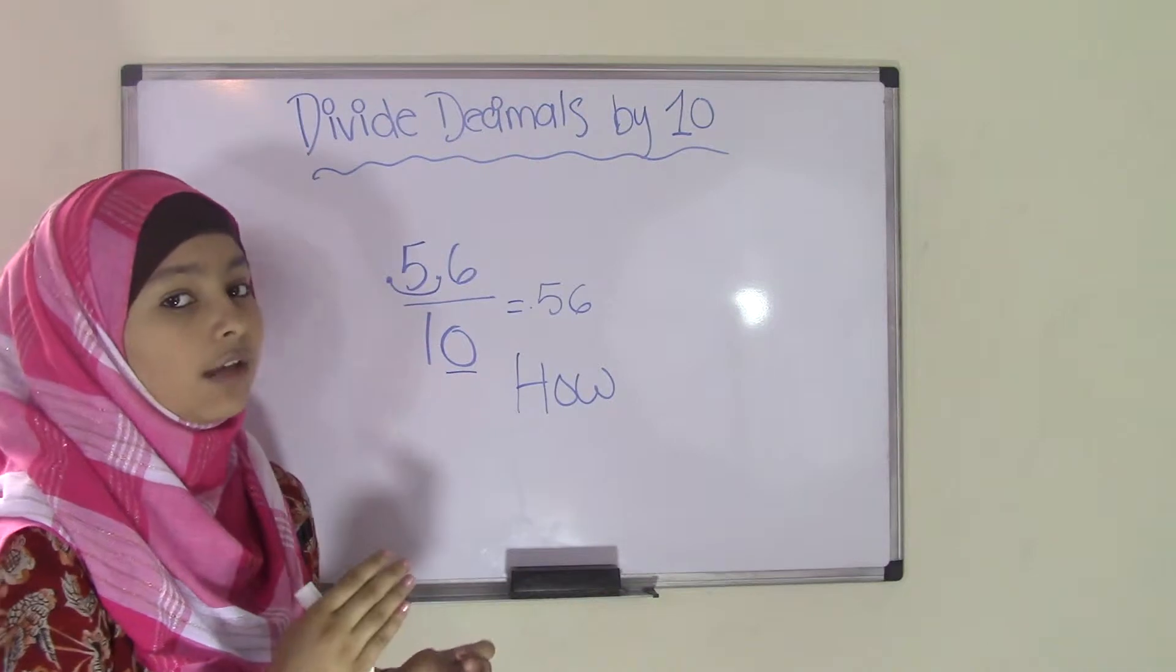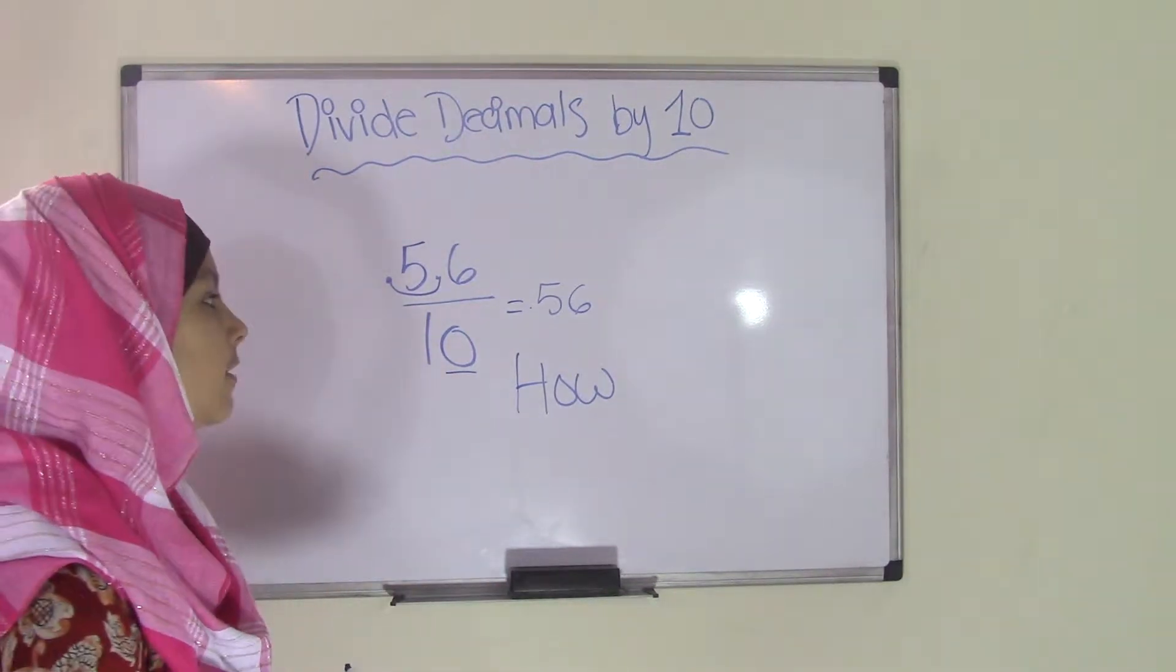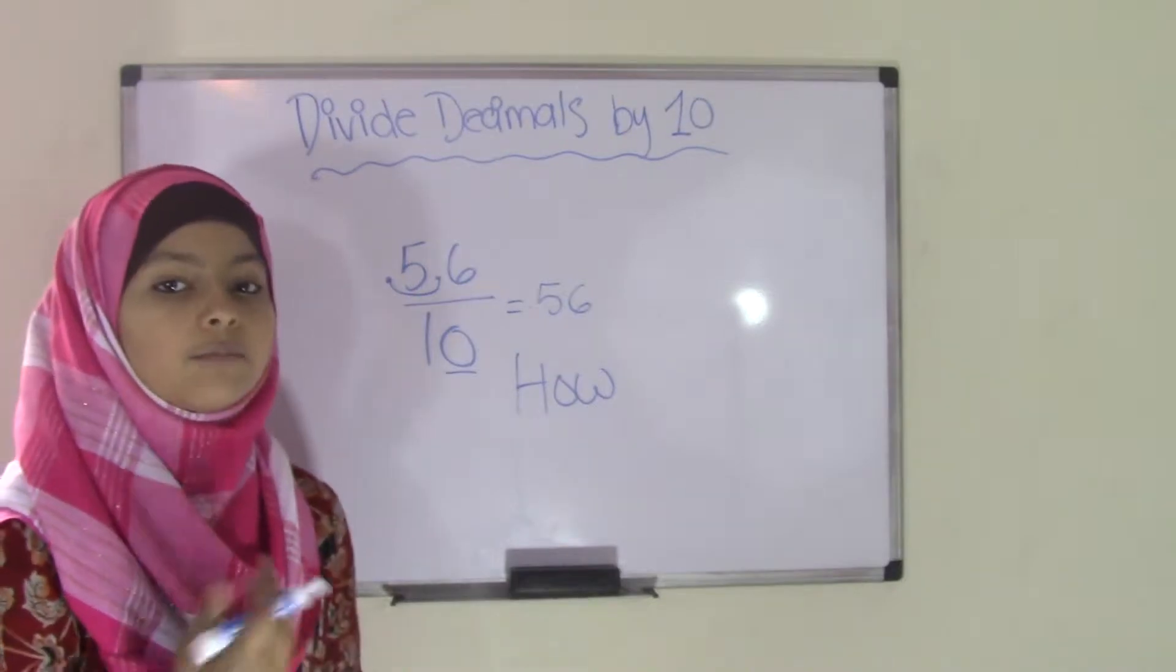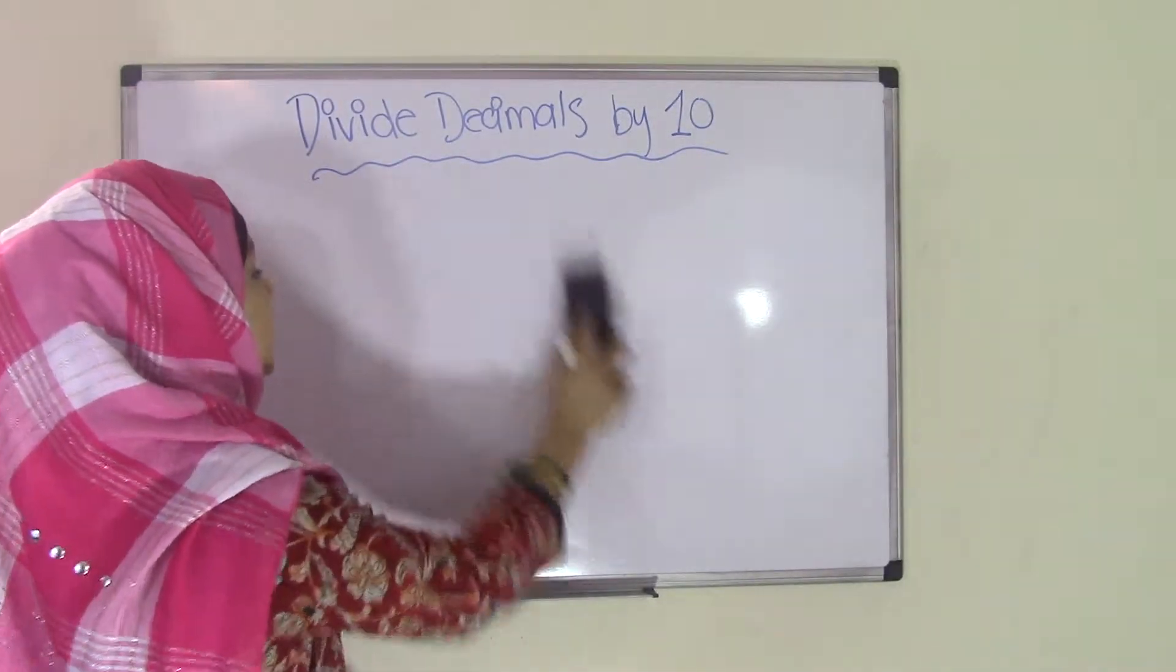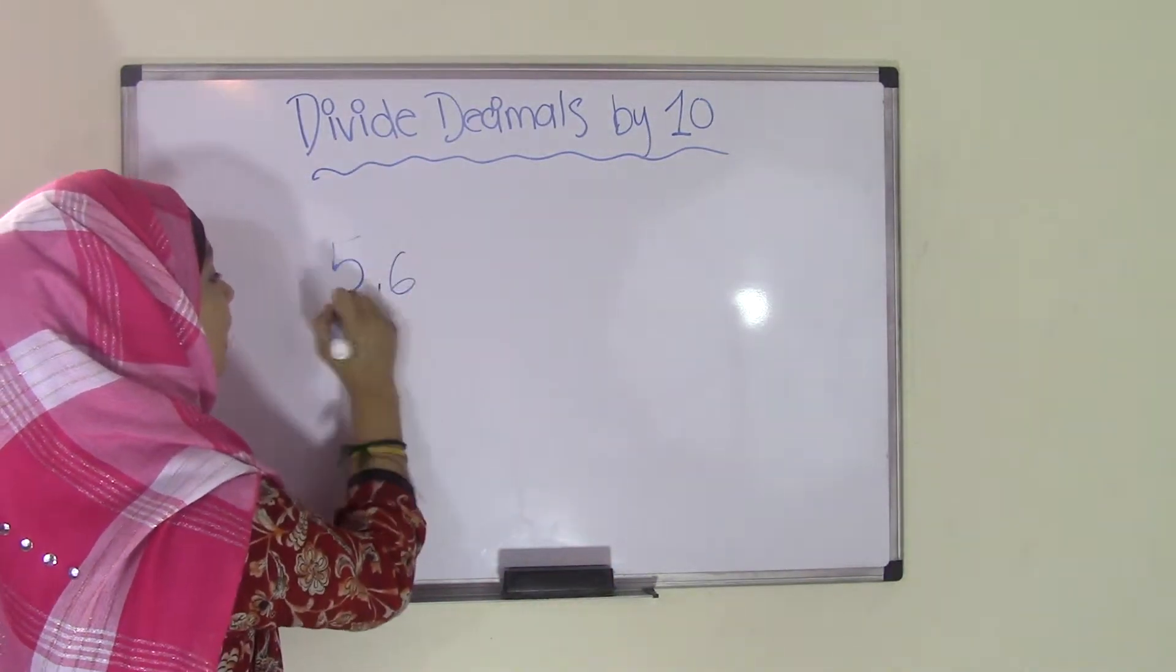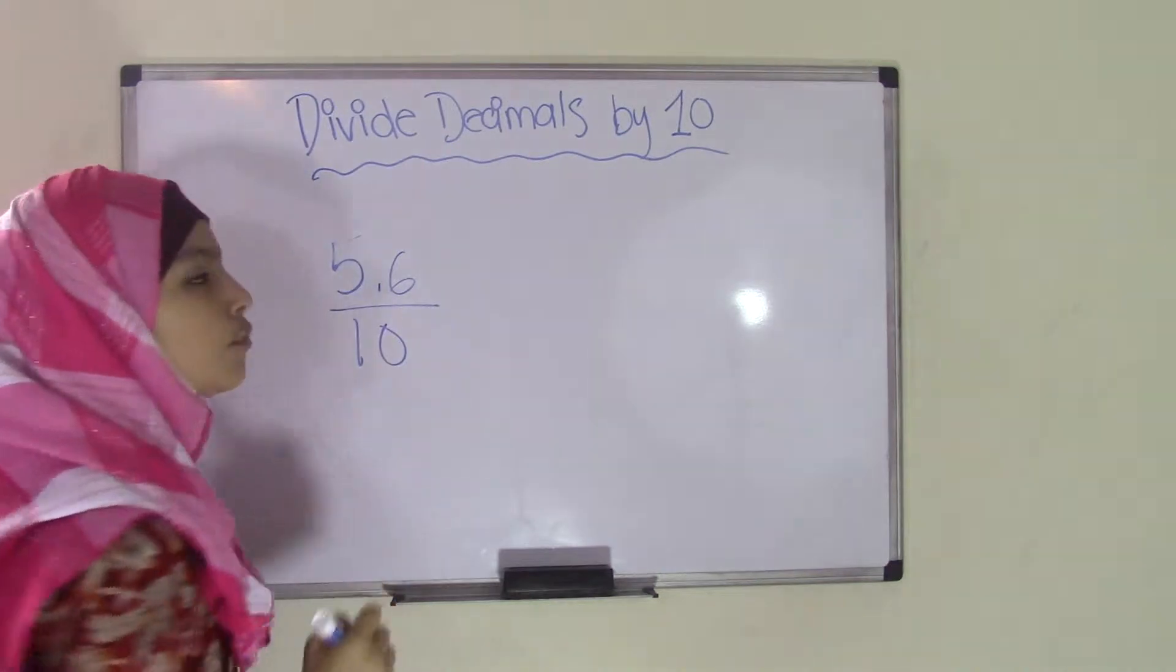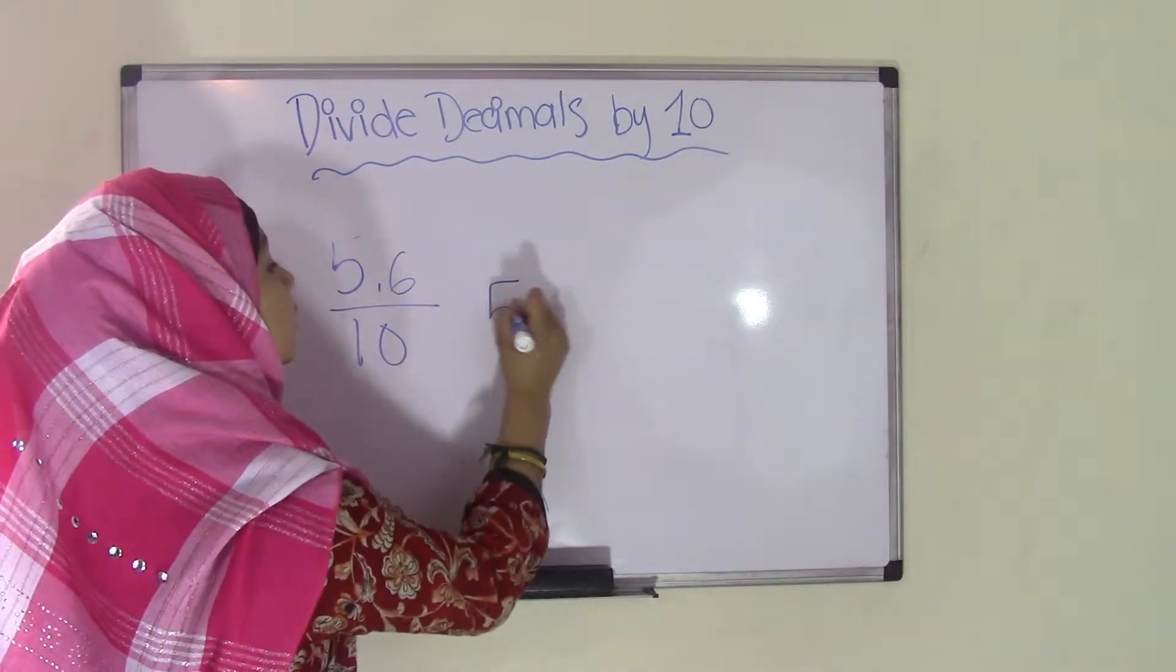So I already know that our first video for Birman System Math Club was on what is place value. If you get this out, we're going to use the same question, which is 5.6 divided by 10, but this time we're going to use place value. So look at the decimal number, which is 5.6, write it over here.